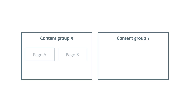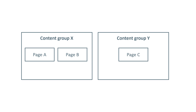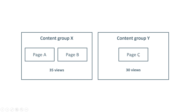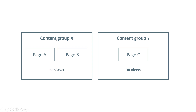For example, I'm looking at content group X and I know that this content group has 35 views because it is the sum of these two pages. Then I have a second group where that third page is included, and now I see that I get more views when it comes to content group X.